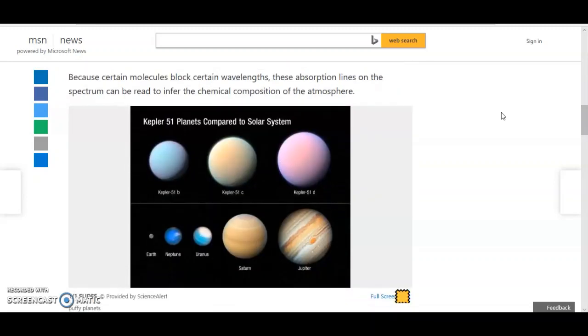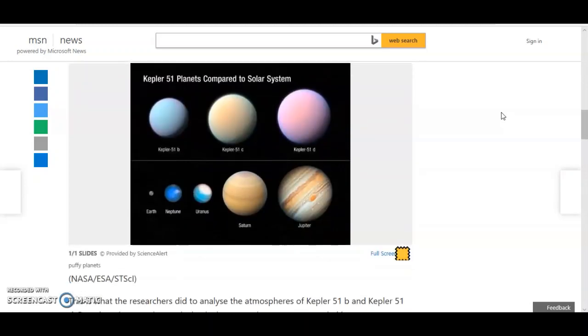And there we have an artist rendition of Kepler 51 planets compared to solar system. Oh, look how beautiful the colors are. I particularly like the pink one on the right, Kepler 51 D. What a beautiful planet, very nice indeed. Congratulations to the artist, bravo my man, bravo.